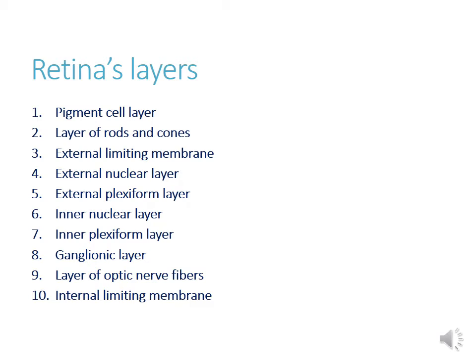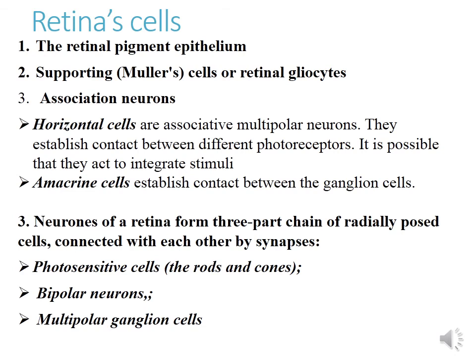On this slide you can see all layers of the retina. The retina contains: retinal pigment epithelium, gliocytes or supporting cells, and two types of neurons — association neurons (presented by horizontal cells and amacrine cells) and neurons which form the conduction chain. Horizontal cells are associative multipolar neurons that establish contact between different photoreceptors, possibly acting to integrate signals. Amacrine cells establish contact between ganglion cells.